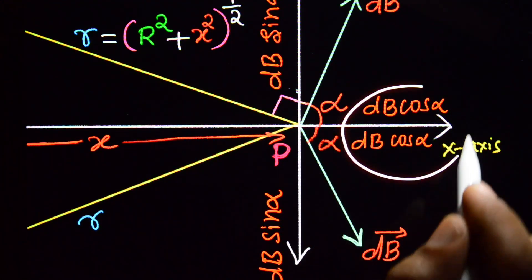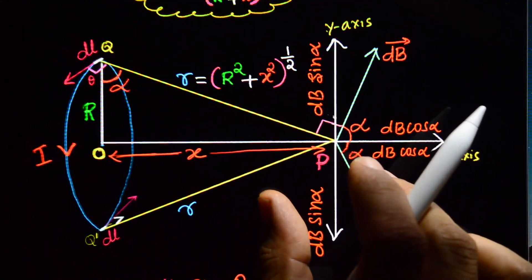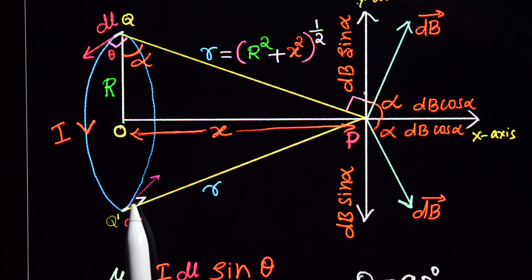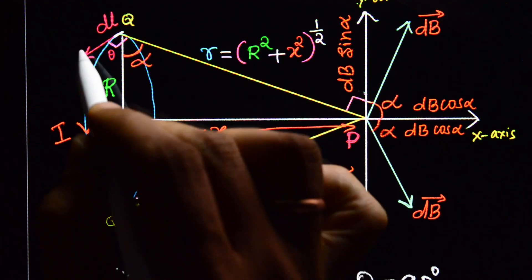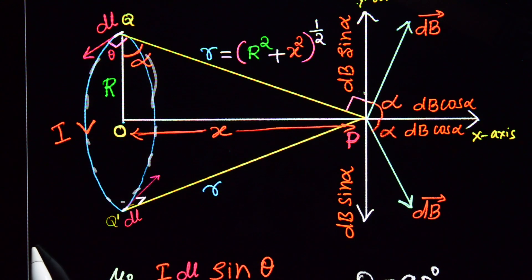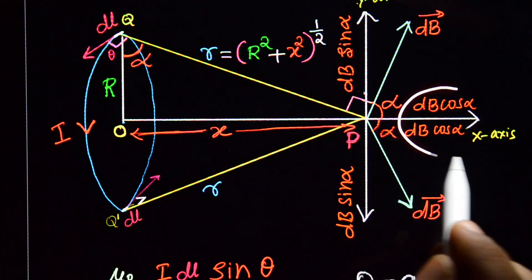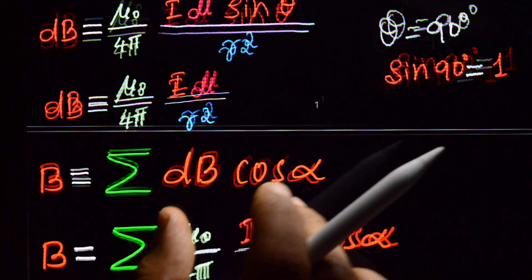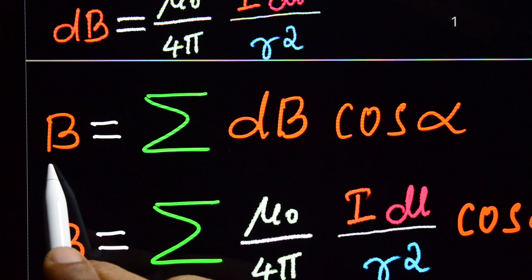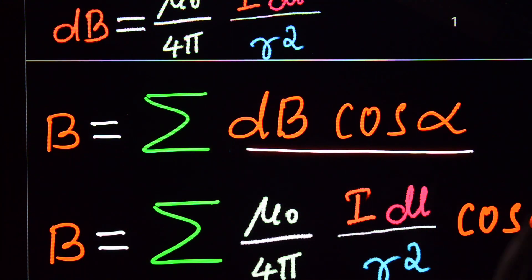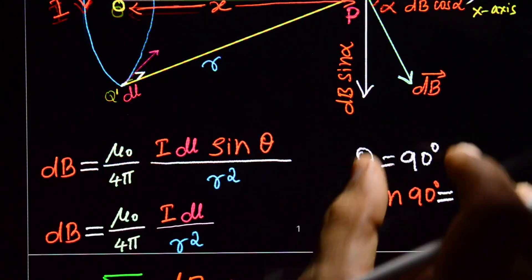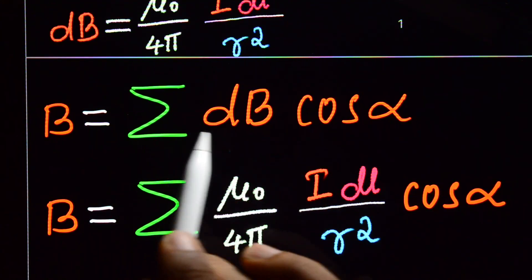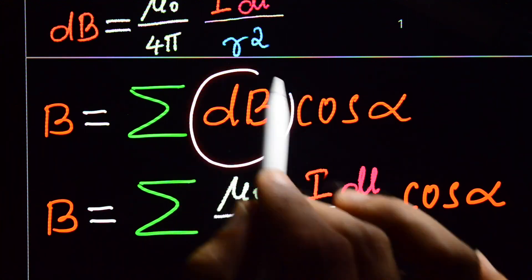Similarly, DB from Q' is also resolved into DB cos(alpha) along the X-axis and DB sin(alpha) along the Y-axis. The DB sin(alpha) components get vanished because they are in opposite directions. The DB cos(alpha) components add up. This is not only for these two diametrically opposite current elements — there are N such pairs. All vertical components vanish, horizontal components add up, and the net magnetic field at point P is B = Σ DB cos(alpha).